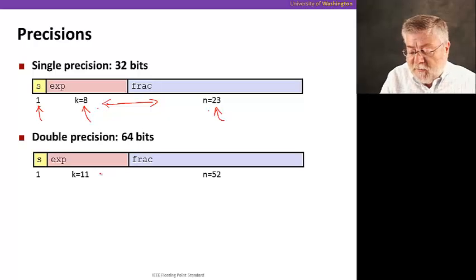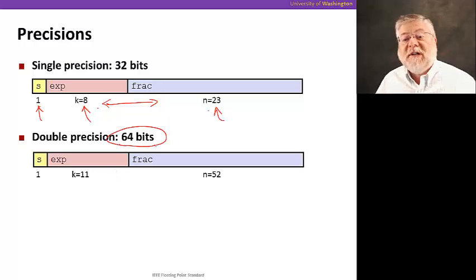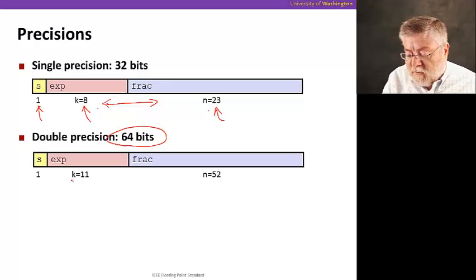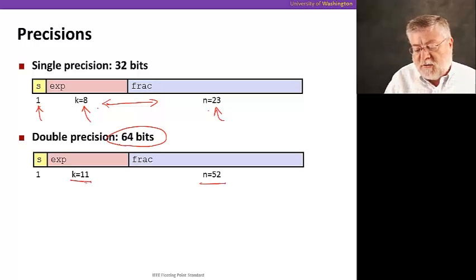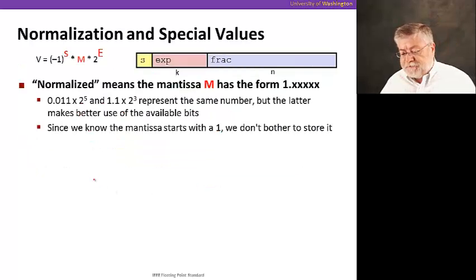So in IEEE floating point, there's also a 64-bit representation of floats, or doubles, that uses 11 bits for the exponent and 52 for the fraction. So quite a bit more range and also more precision.